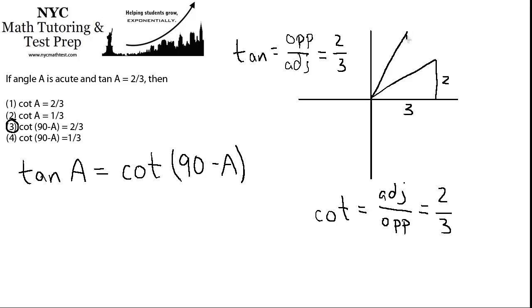So now this side is three, and this side is two. So the adjacent is two, and the opposite is three.